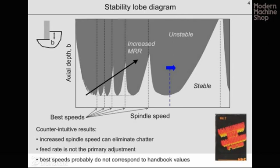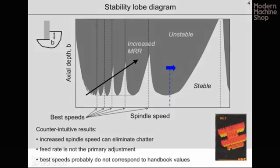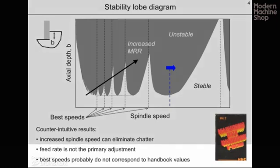This graph shows a stability lobe diagram. On the vertical axis we have the axial depth of cut in milling, and on the horizontal axis we have the commanded spindle speed. The plot is divided into two regions: a gray region indicating axial depth and spindle speed combinations that will give chatter, and a white region identifying combinations that will lead to stable operation. There are particular spindle speeds where increased axial depths of cut can be achieved, identified as the best speeds, showing the peaks of the stability lobes.